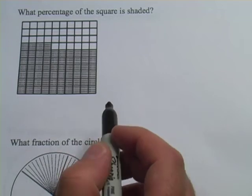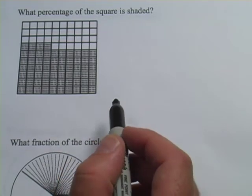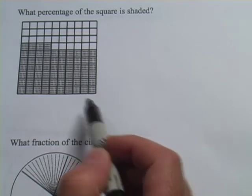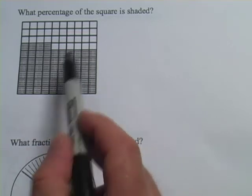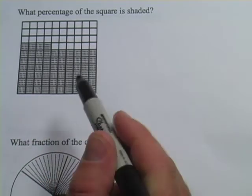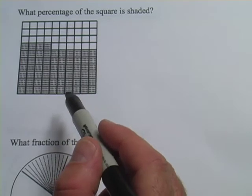In these problems, we're looking at determining either a percentage or a fraction of some shaded area on a diagram. So what you really need to do is look at how many divisions there are, whether it's a grid or a pie, and then figure out what percentage or fraction is shaded.